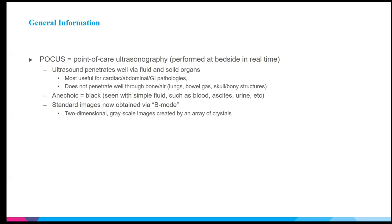So why is POCUS important? It allows for a great deal of bedside information done in real time. Ultrasound is good with penetrating fluid and solid organs, so classically we use it for cardiac, abdominal, and GI pathologies. It's less useful when dealing with bony structures or air-filled structures, but it has still found good use in lung ultrasound.